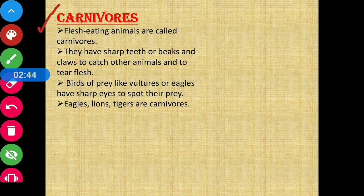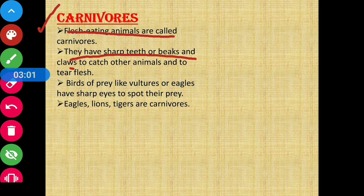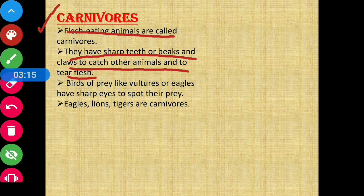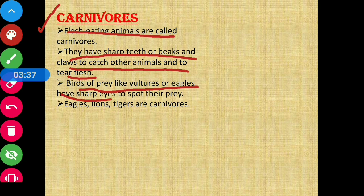Next is carnivores. Flesh-eating animals are called carnivores. Their special features are that they have sharp teeth or beaks and claws to catch other animals and to tear flesh. For birds, they have sharp beaks and sharp claws. Birds of prey like vultures or eagles also have sharp eyes to spot their prey.